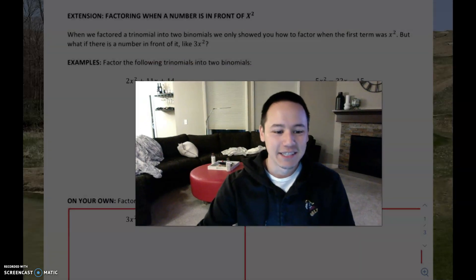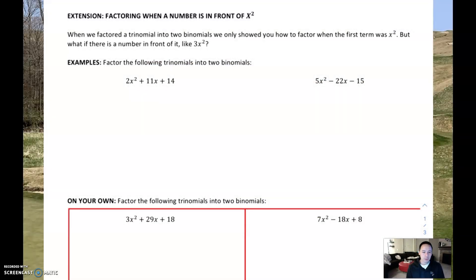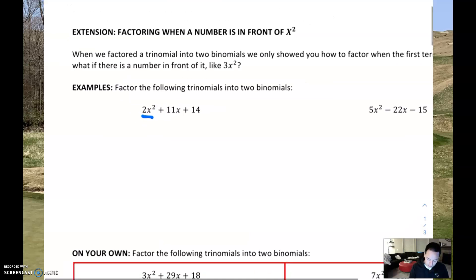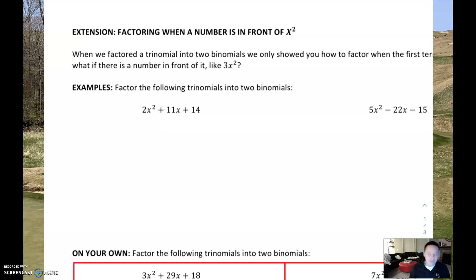If you are watching this video, that means you want some extra credit. So I'm going to show you how to get some extra credit on this next test. Previously when we've been factoring, it's been relatively simple because we just see that first term as x squared. But now, what happens when you see a number in front of x squared — a 2x squared or a 5x squared or any number x squared? That's what we're going to show you in this video.